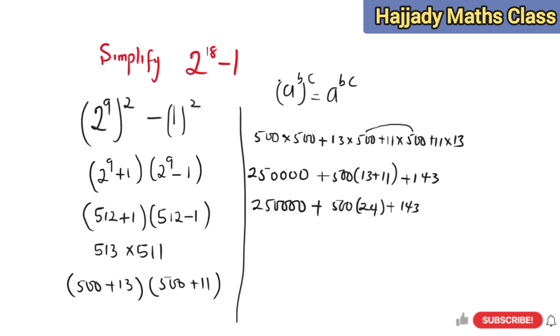I want you to remember that 24 multiplied by 1000 is 24,000, and 500 is half of 1000, so half of this is 12,000. So 500 multiplied by 24 is 12,000. So we have 250,000 plus 12,000 plus 143.